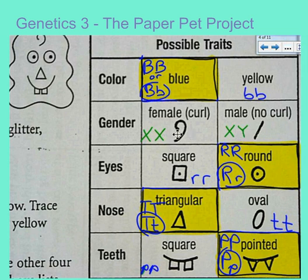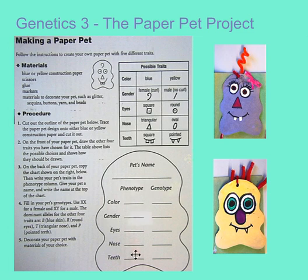For male and female, there is no dominant or recessive. Males have an X and a Y chromosome; females have two X chromosomes — the same way it is in humans as well. One is not dominant over the other. You can now fill in the genotype of your paper pet on the back of the paper pet card. At this point you have the phenotype filled in with all the traits and the genotype. The next thing is to draw the face on the paper pet with the characteristics that you chose. You can decorate it at this time as well.